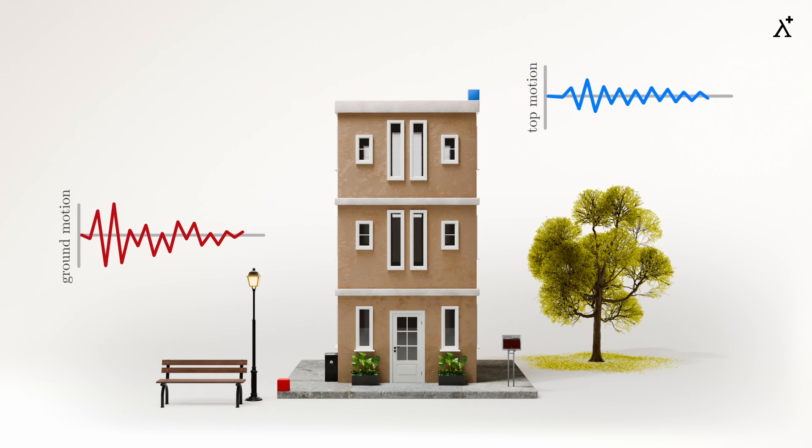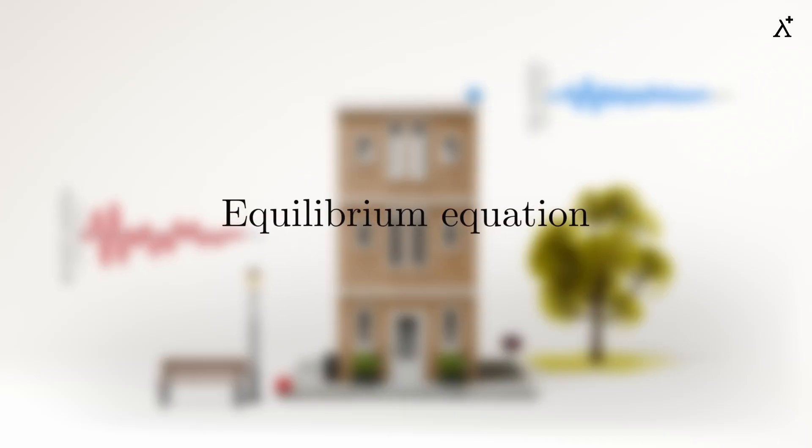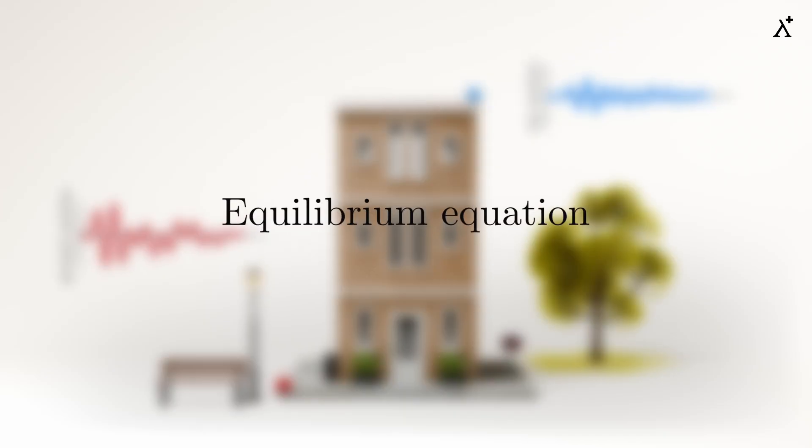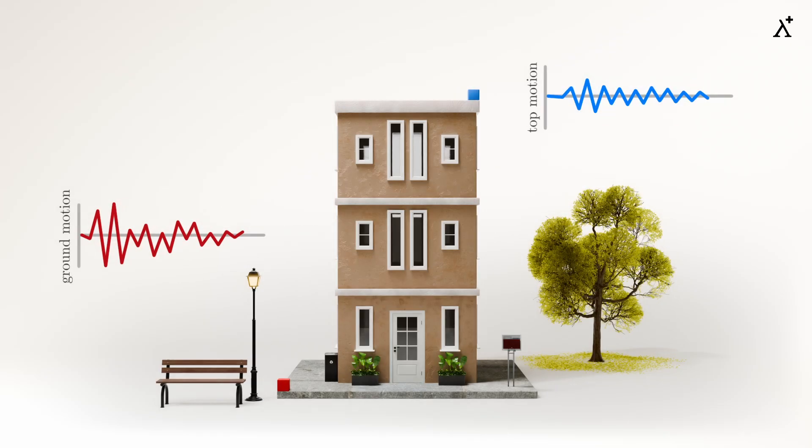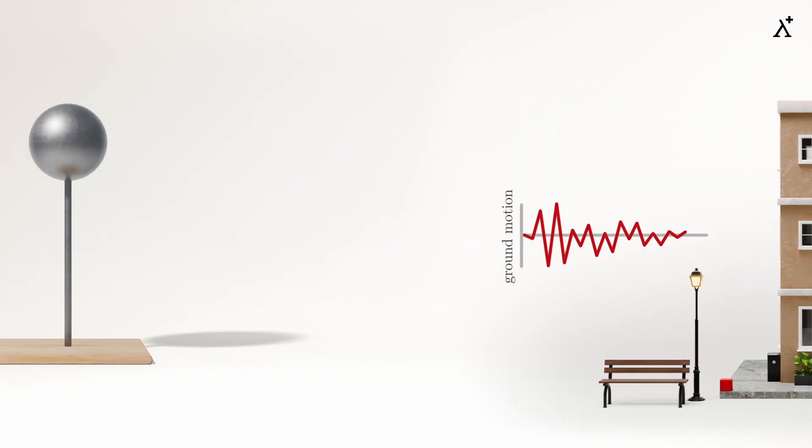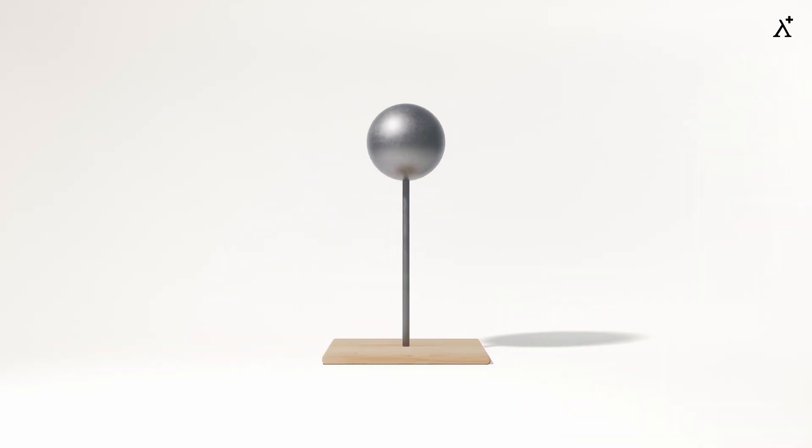To study this mathematically, we have to first look into the equilibrium equation governing the behavior of a structure subjected to seismic load. This we can understand with the help of a simple ball on top of a stick model. When load is applied on the ball, it moves in the direction of application of load. This displacement is directly proportional to the magnitude of applied force. More is the force, more is the displacement. The constant of proportionality is called stiffness. It is the force required to produce unit displacement in the structure.